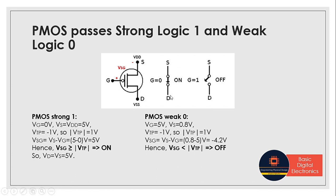Current flows from source to drain because source is connected to VDD, which has the higher potential. Since it is a closed circuit, whatever the source input value is, exactly the same value is passed to the drain output. So VD = VS = 5 V. At low input voltage, VD equals VS — meaning we are passing logic 1, the high value, to the drain output terminal. That's why PMOS passes strong logic 1 at low input voltage.